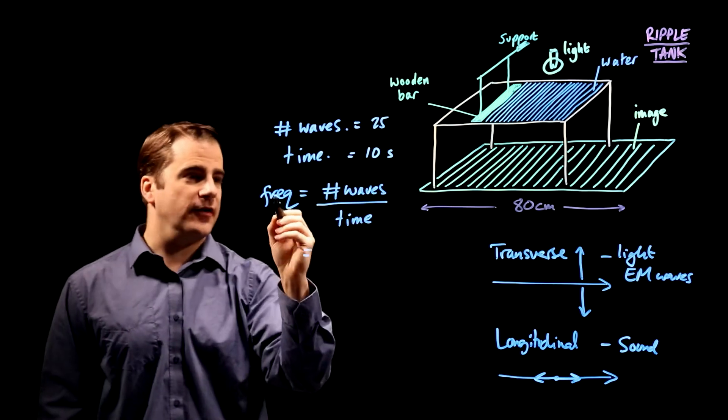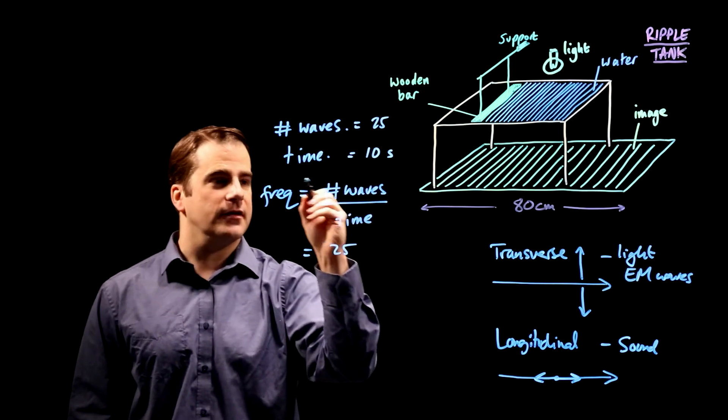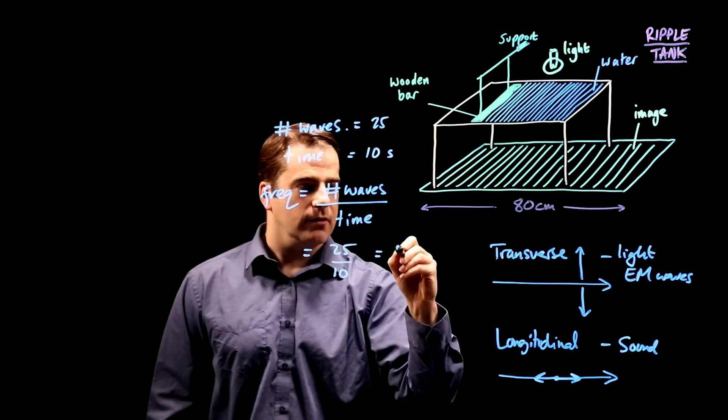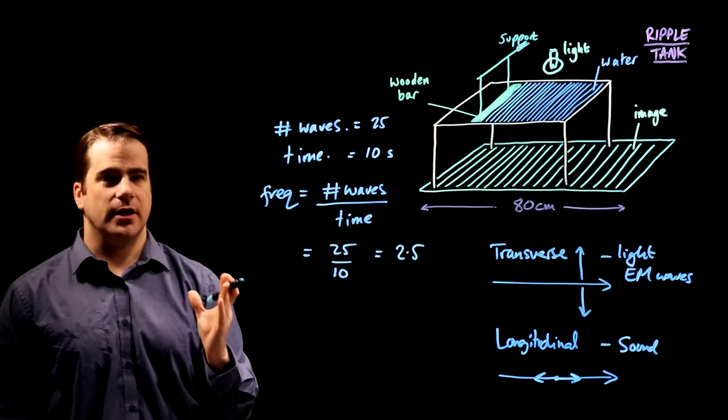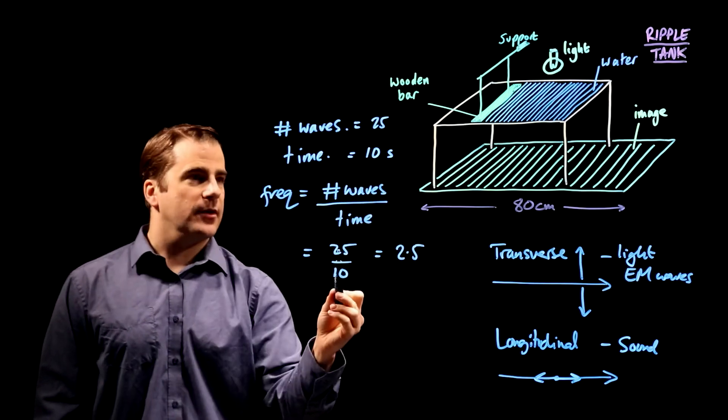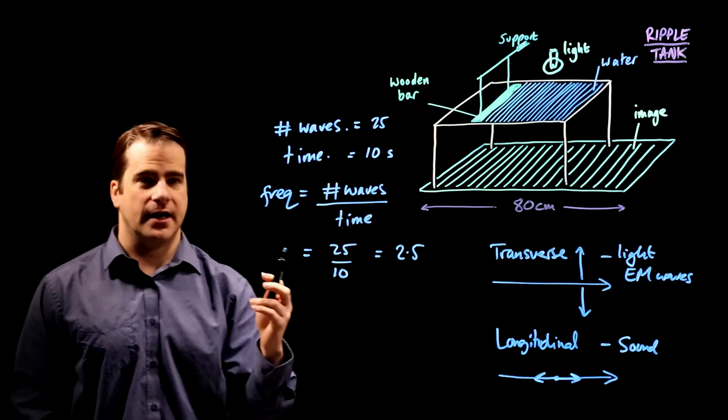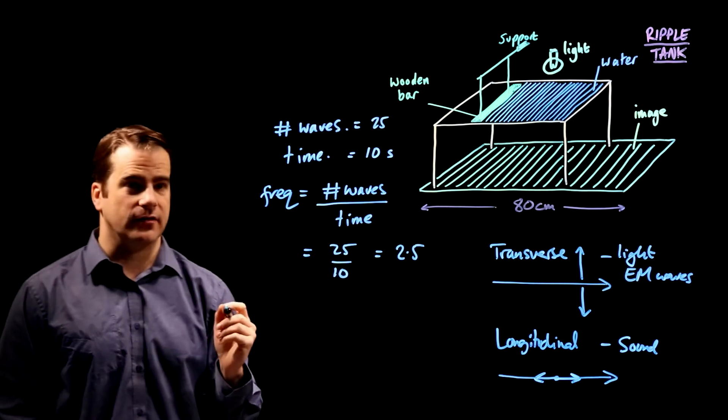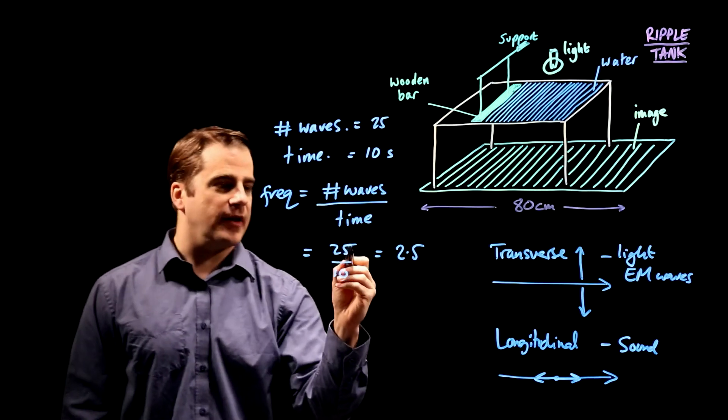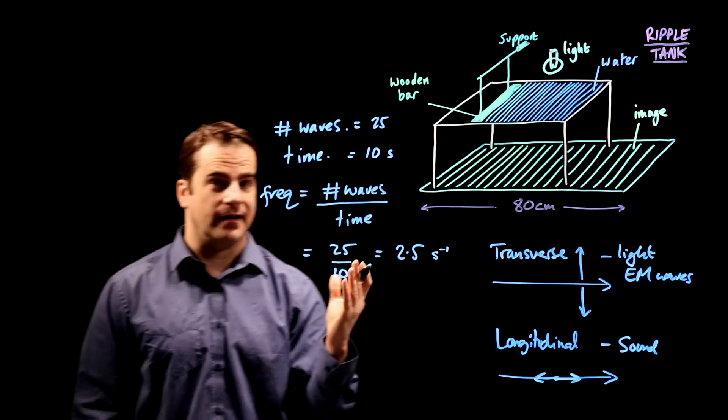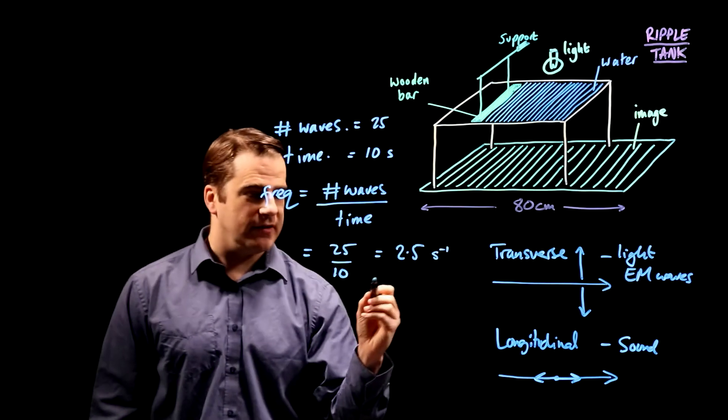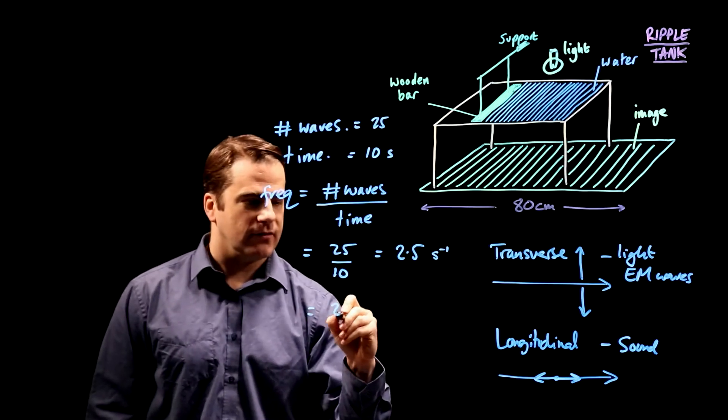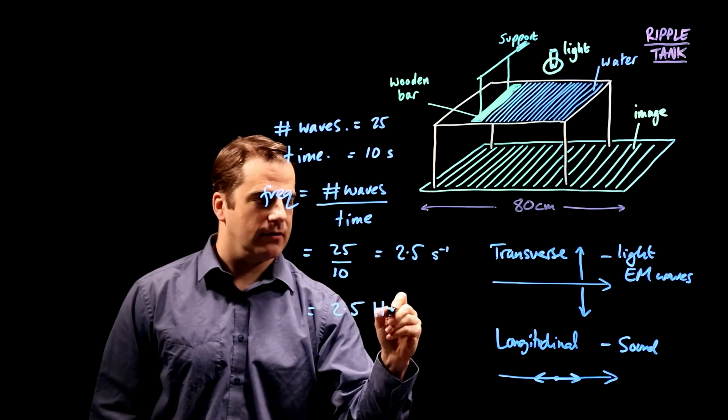Then the frequency would be number of waves is 25 divided by time, which is 10. And that would be 2.5. What's the unit of frequency? Well, look, 25 is a number, but it has no unit. Time is seconds. So it's something per second, or s to the minus one, and per second is hertz. So that means it's 2.5 hertz.